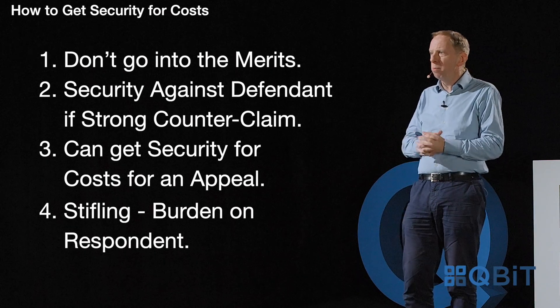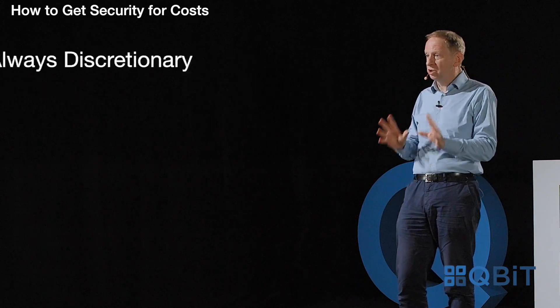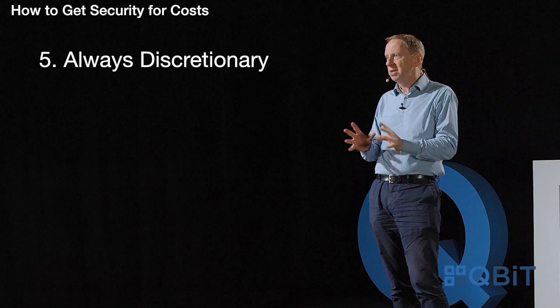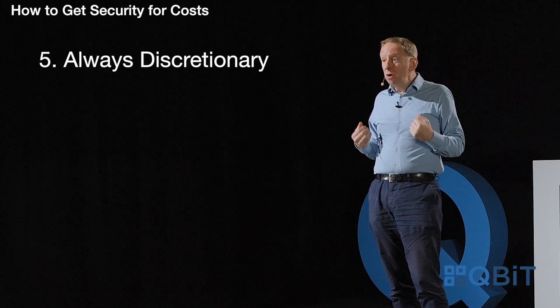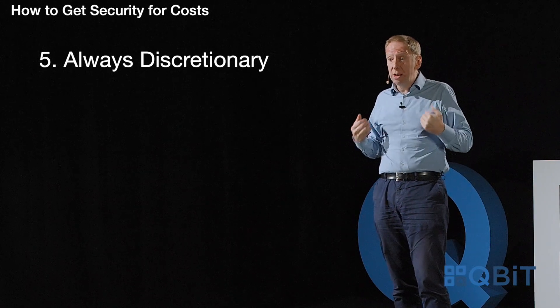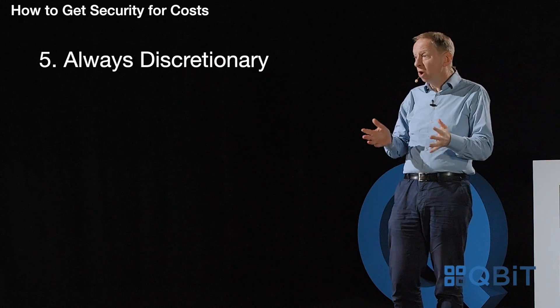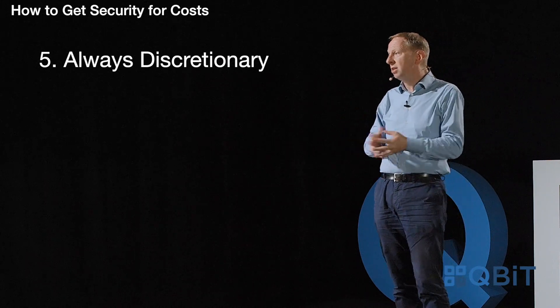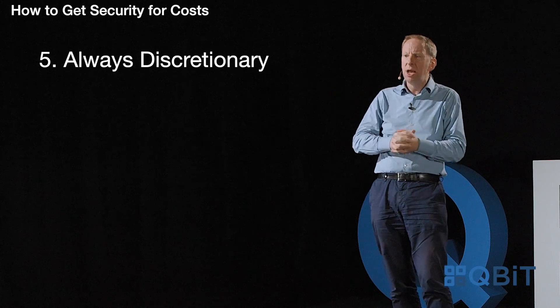That's called the rule in York Motors. Security for costs is always discretionary — it's never automatic. So, for example, if the claimant can say the only reason they haven't got any money is because the defendant stole it all, then the court may weigh that in the discretion and not order the security, or order it in a much reduced sum. That is how to get security for costs. Thank you.